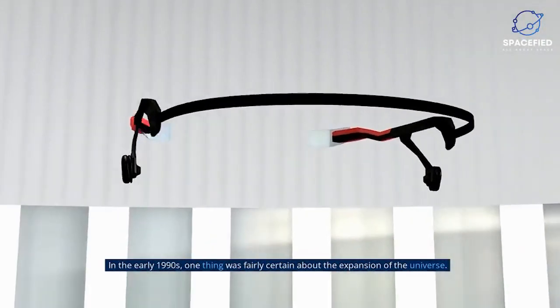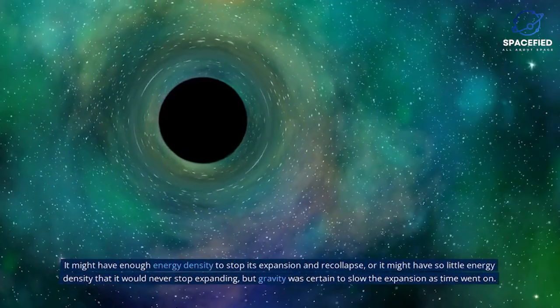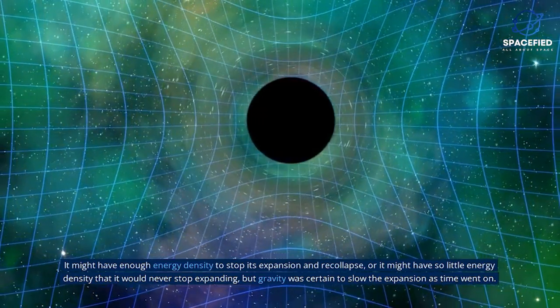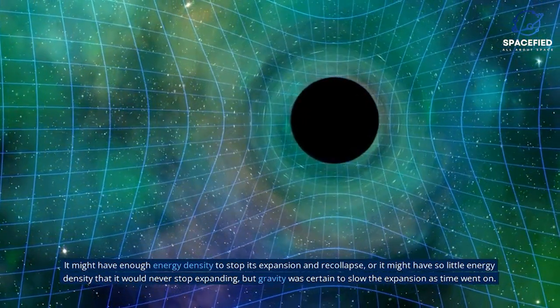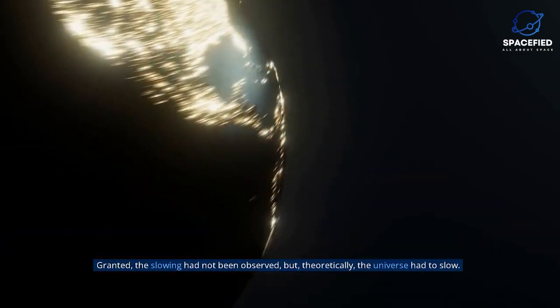In the early 1990s, one thing was fairly certain about the expansion of the universe. It might have enough energy density to stop its expansion and recollapse, or it might have so little energy density that it would never stop expanding. But gravity was certain to slow the expansion as time went on. Granted, the slowing had not been observed.